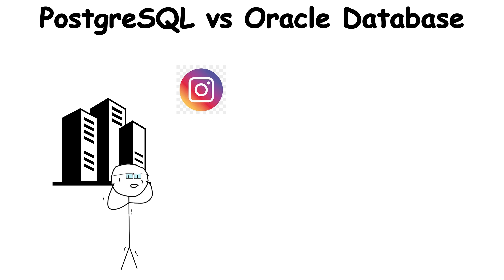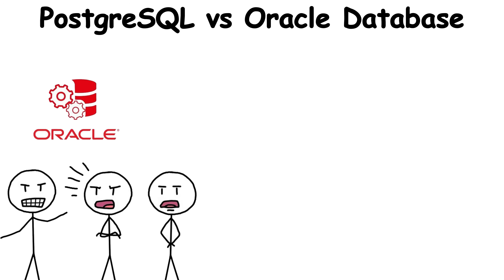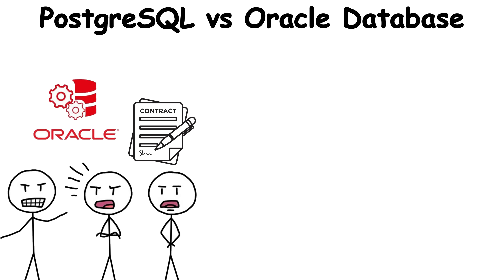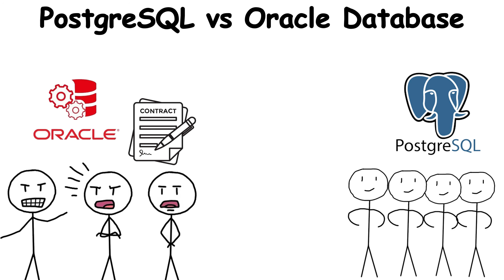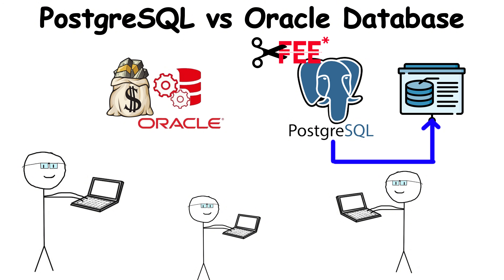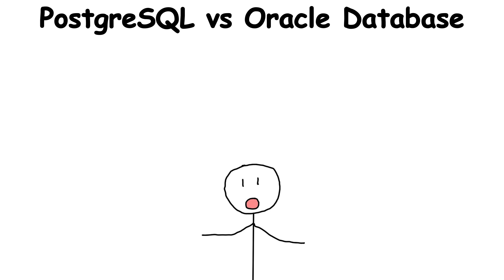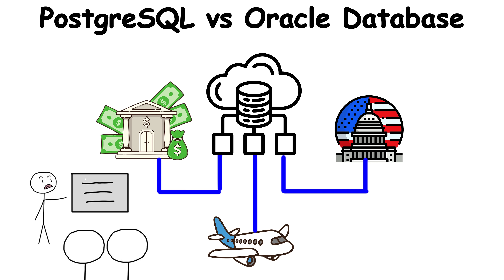Big names like Instagram and Spotify rely on Postgres daily. Oracle locks clients in with contracts that last decades, while Postgres thrives because a global community keeps improving it. For startups, the choice is obvious — pay millions to Oracle, or grow with a system that costs nothing but scales endlessly. It's one of the clearest examples where open source didn't just compete — it took entire industries by storm.